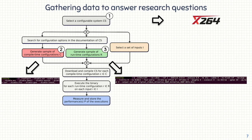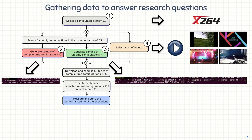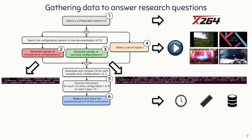In step 4, to test the software system under different conditions, we download different inputs I. For a video encoder like X264, inputs are just input videos — we selected 8 videos with different contents like sports, animation movies, gaming, and having different resolutions. In step 5, we download the source code and compile it with each compile time configuration of C, then execute the binary with all runtime configurations of R on all inputs of I. In step 6, for all executions, we measure different performance properties P. For X264, we measure the encoding time, the size of the encoded video, and the amount of data encoded per second.